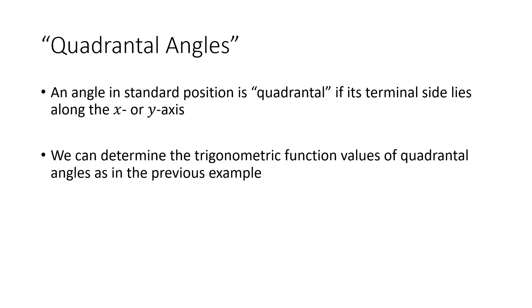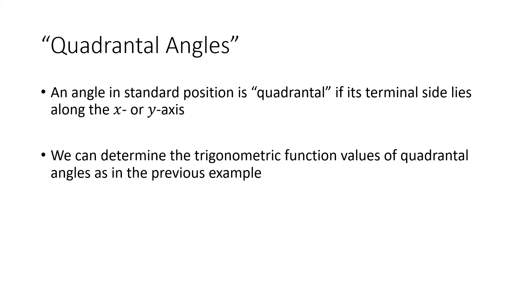3π/2 is an example of what we call a quadrantal angle. It's a clunky word, but it just means that the terminal side of the angle in standard position lies along the x- or y-axis. These are angles where it's particularly easy to find values of the trig functions, because we can pick any convenient point on the axis.